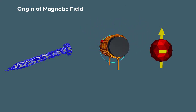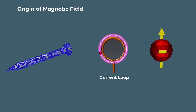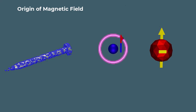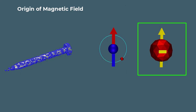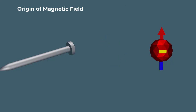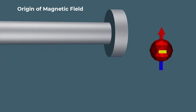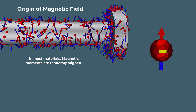The orbital motion of these electrons around the nucleus acts like a current loop and causes each electron to act like a microscopic magnet called a magnetic moment. The spin motion also produces a magnetic field and acts like a tiny magnet.